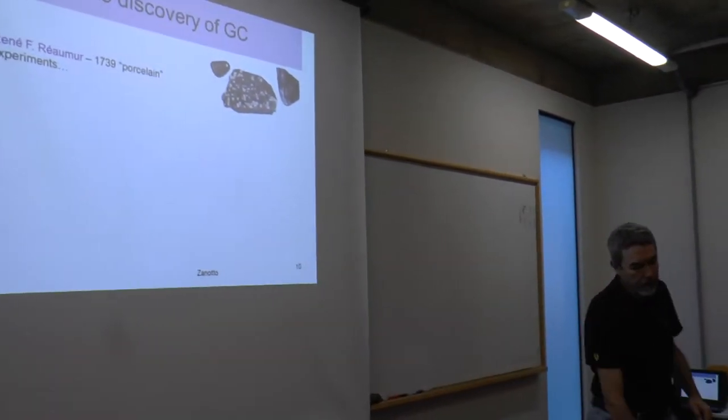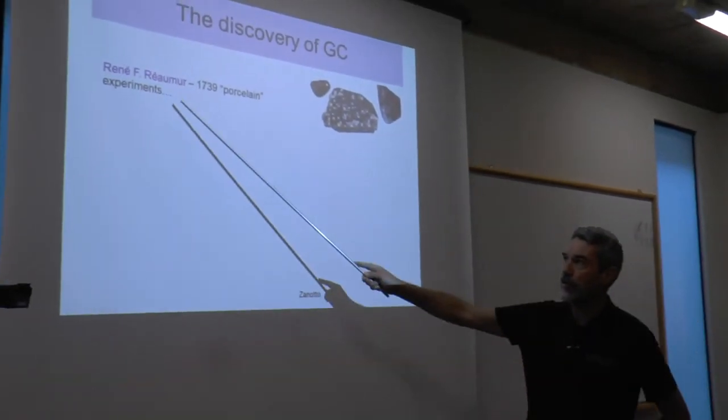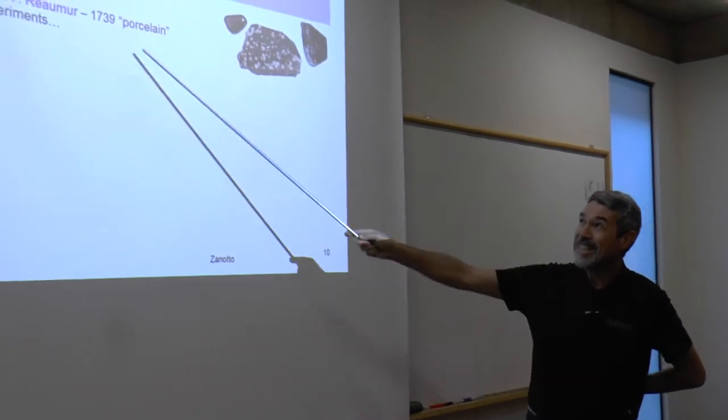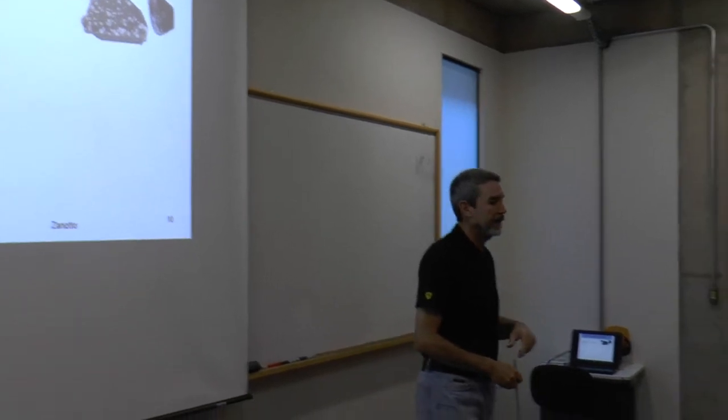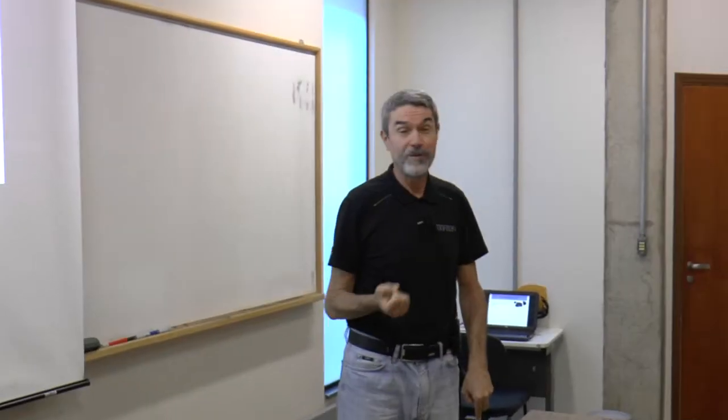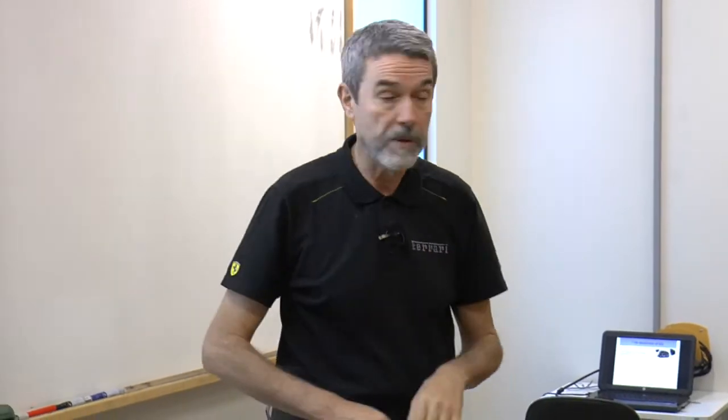The first people to try to produce glass ceramics were a French researcher called Remueur, in 1739. He wanted to produce porcelain by crystallizing glass bottles. But to his surprise, the glass bottles were melting and losing their shape before they crystallized. The secret of glass ceramics is to induce crystallization in the volume — in the bulk. If you put a glass bottle in a furnace, it will crystallize from the surface and sag and deform. So he could not produce a glass ceramic, but he published his paper with all the details of his unsuccessful attempts.